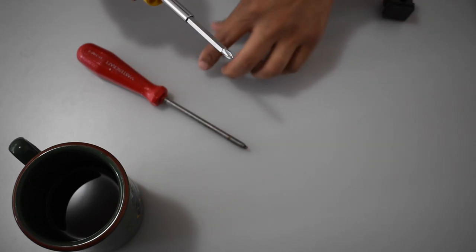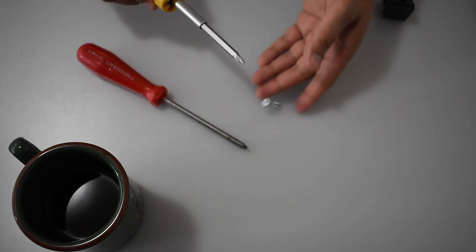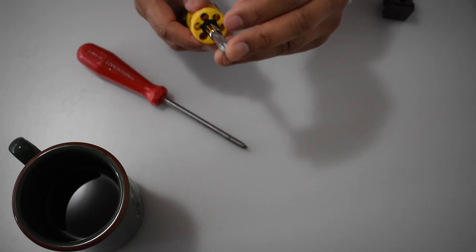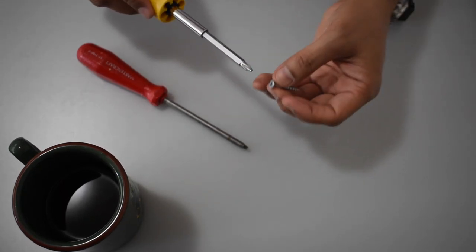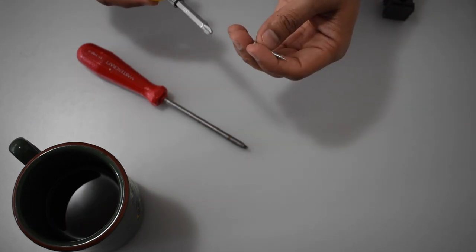Again, this too is not magnetized. You can tell this is a cross head, so it's not even fit on the Robertson head, but still it's not magnetized.